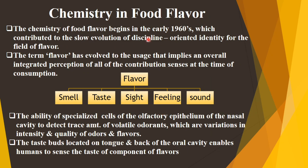In summary, the chemistry of food flavor depends upon the contributing senses — smell, taste, sight, feeling, and sound. Olfactory epithelial cells help detect trace amounts of volatile odorants, which vary in intensity and quality of odor and flavor.